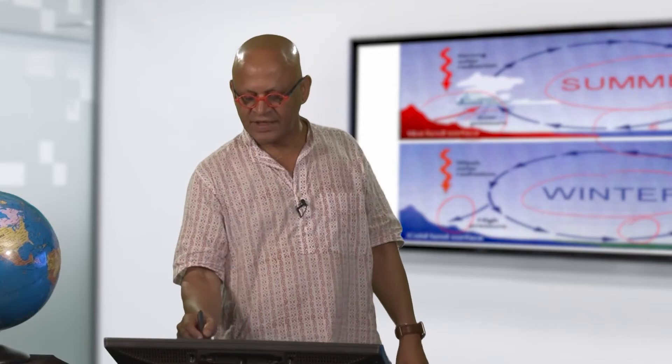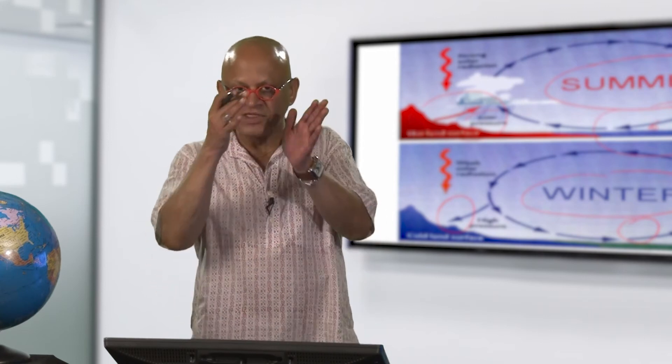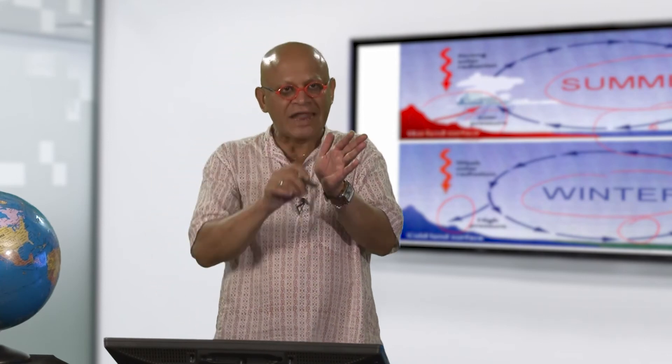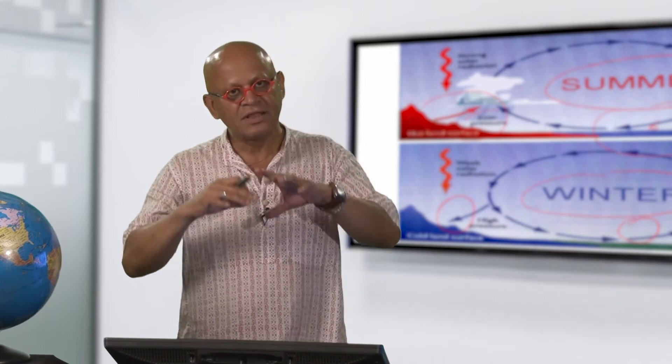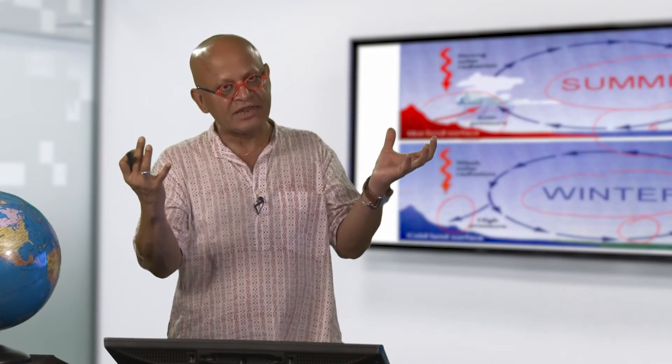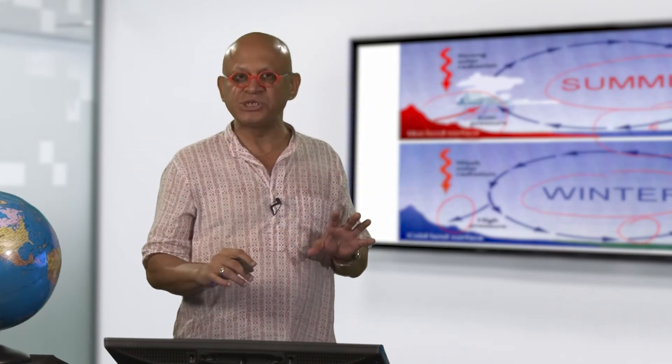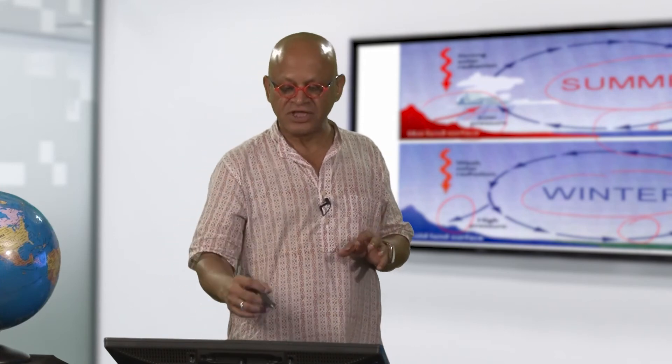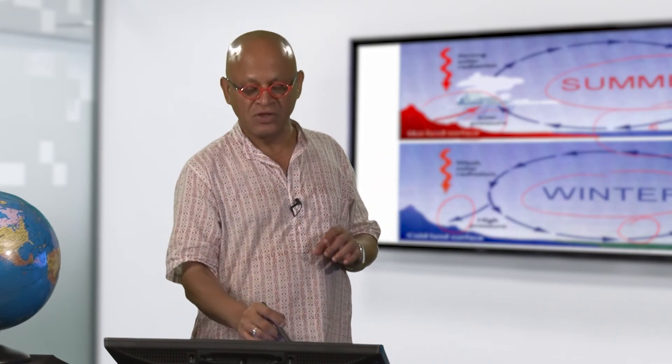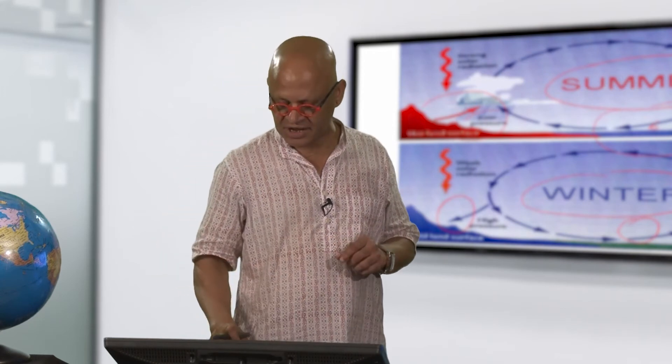So this is kind of a Hadley cell over the Indian region. So it is like a local Hadley cell except unlike the other Hadley cell we looked at, this is changing in season, so in the summer season it is going in one direction, in the winter season it is going in the other direction.